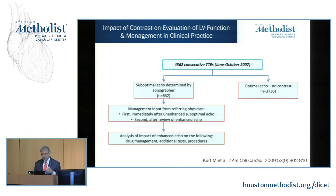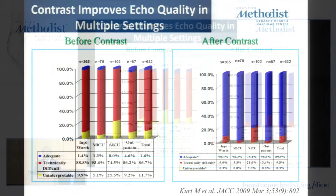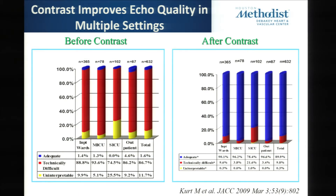We had a consecutive cohort of more than 600 patients in technically difficult situations. Before contrast, mostly technically difficult studies — some of them completely uninterpretable. After contrast use, the vast majority were interpretable, with still some technically difficult. These were in different settings: inpatient wards, medical intensive care unit, surgical intensive care unit, and outpatient. Notice that in the surgical ICU you may still have about 20% that are technically difficult because of so much instrumentation on these very sick patients.